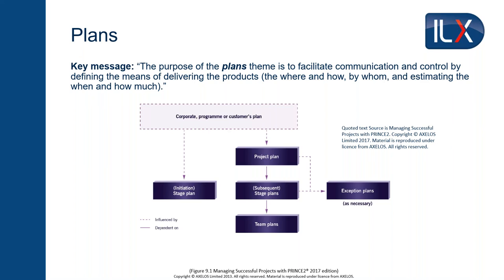There's one more plan: the exception plan, which is a replacement if things don't go to plan. Used particularly at stage and project level, if things go awry — if we can't follow the current plan because we're so far off track — the exception plan covers how to get from the problem back on track. Importantly, your projects don't have to go wrong, but if they do, exception plans are there to get them back on track.